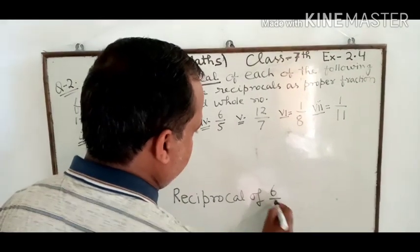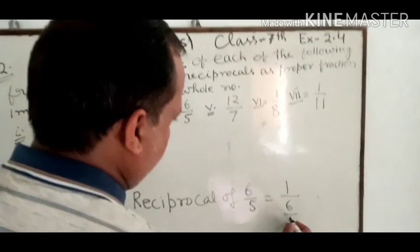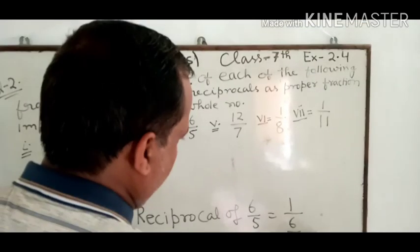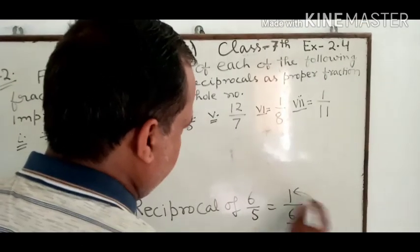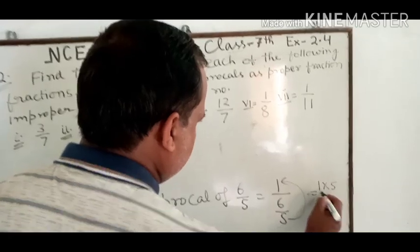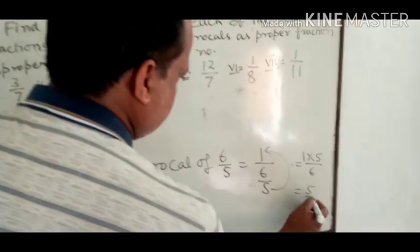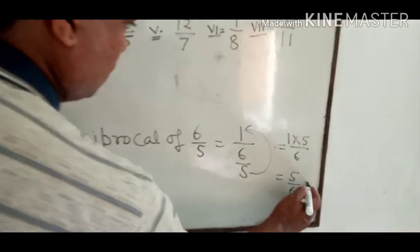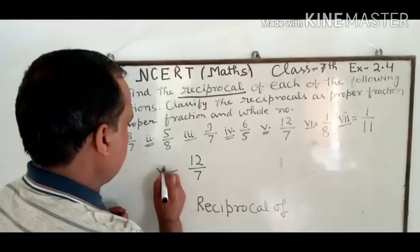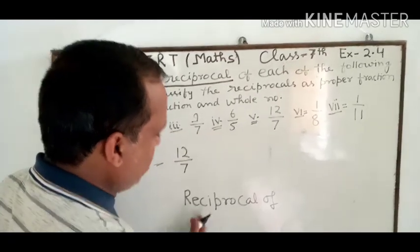Fourth part: 6 upon 5. Reciprocal of 6/5 equals 1 upon (6 upon 5). अब यह 5 ऊपर shift हो गया, तो 1 multiply 5 upon 6 = 5 upon 6. This is your answer for part four.